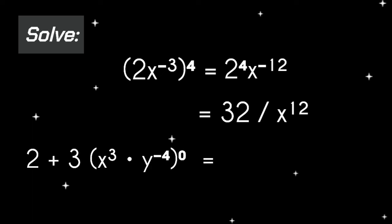Next: 2 plus 3 times the quantity of x cubed times y raised to the power of negative 4, the whole quantity raised to the power of 0. From the zero power rule, any term with an exponent of 0 equals 1. So that's 2 plus 3 times 1, which equals 5.